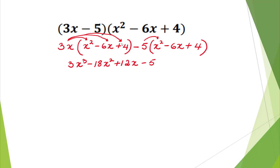Negative 5 multiplied by x squared is negative 5x squared. Negative 5 multiplied by negative 6x is positive 30x. Negative 5 multiplied by positive 4 is negative 20.